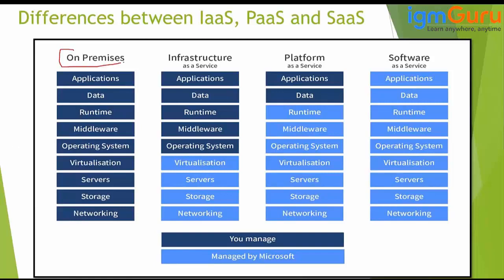The first is on-premises. On-premises means your company or your client already has some Windows Servers and they want to host their website on their own premises. In that case, everything — accountability, maintenance, the overall responsibility — is at our end or from the client end. So networking, storage, server, virtualization, OS, middleware, runtime, data, application — everything we need to take care of in an on-premises environment.